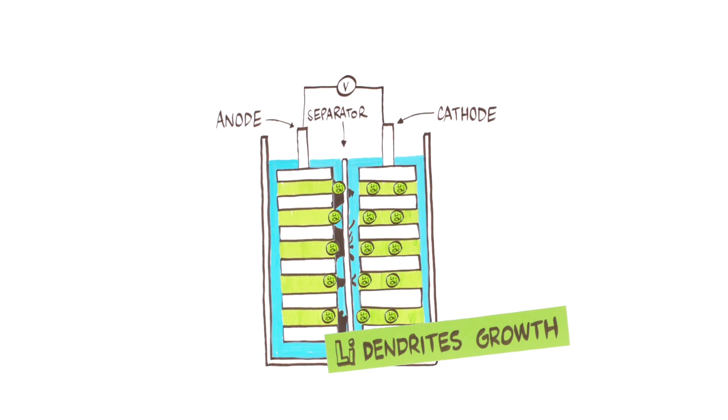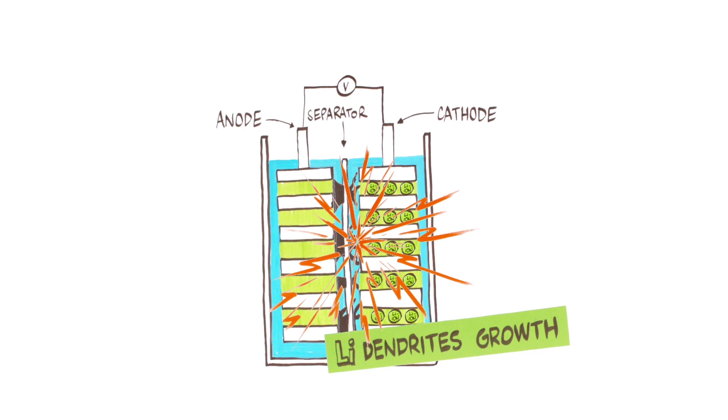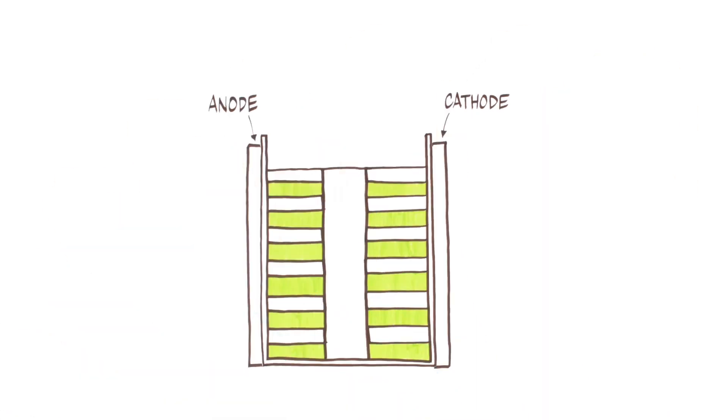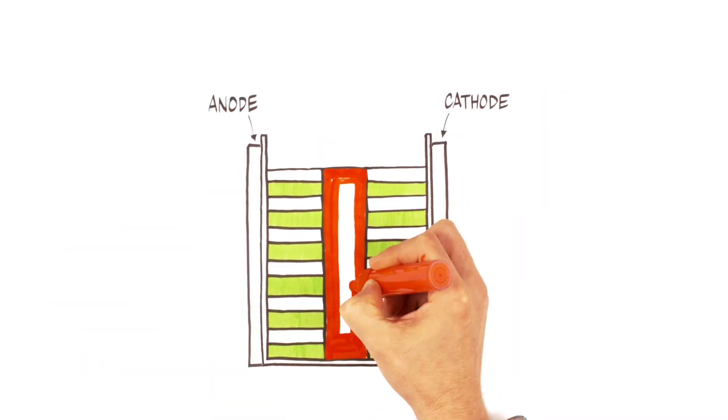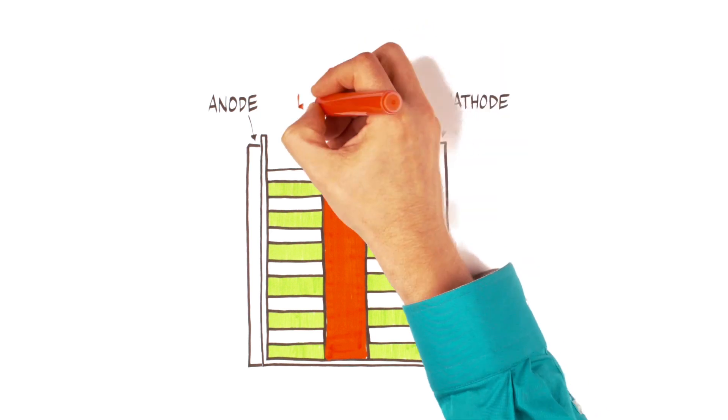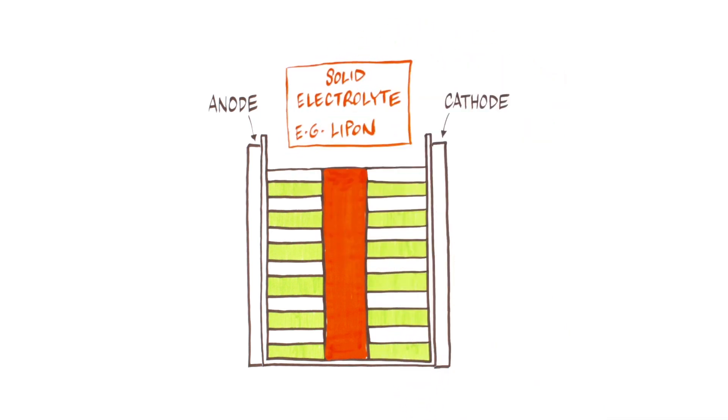The growth of dendrites through the electrode separator, in combination with a flammable organic electrolyte, can ignite the battery. One of the promising trends in the development of lithium-ion batteries is the replacement of the liquid electrolyte and separator by a solid electrolyte.